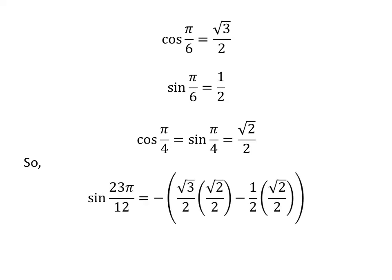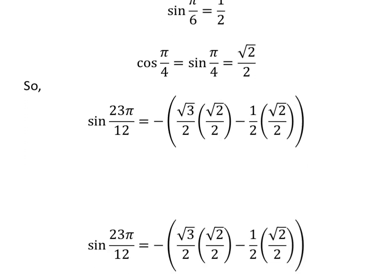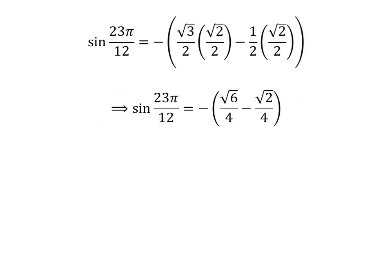We get sine of 23π/12 is equal to minus of (√3/2 times √2/2). Straight multiplication gives us sine of 23π/12 is equal to minus of √6/4 minus √2/4.